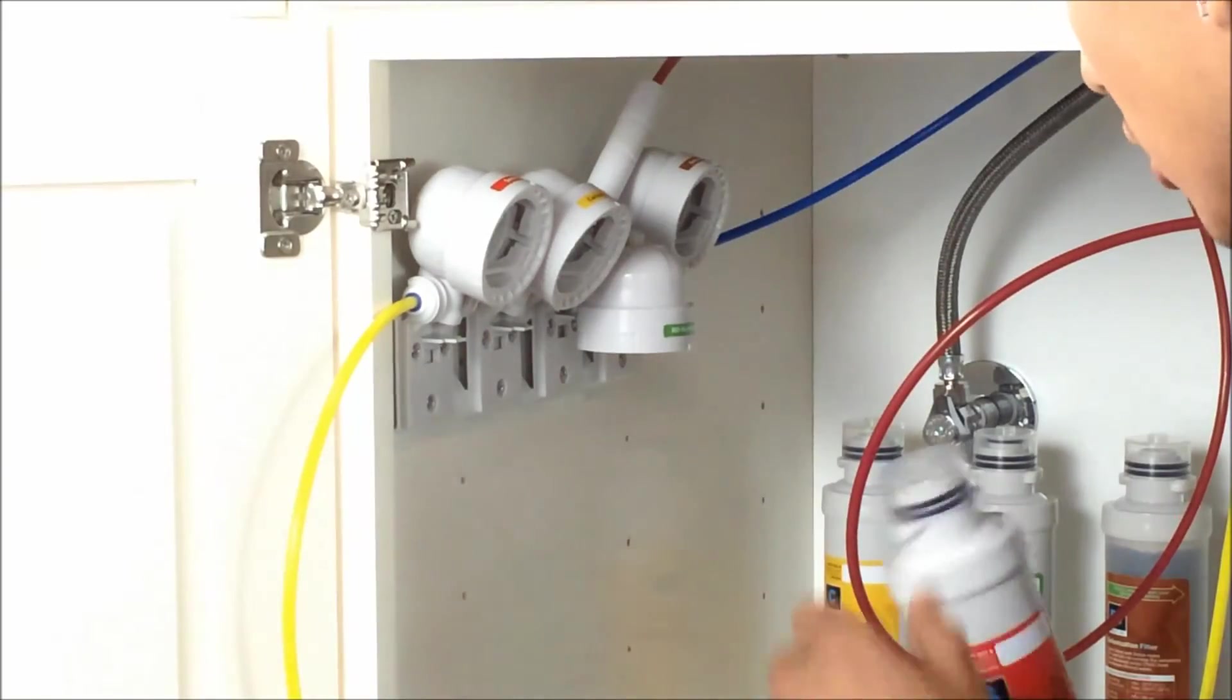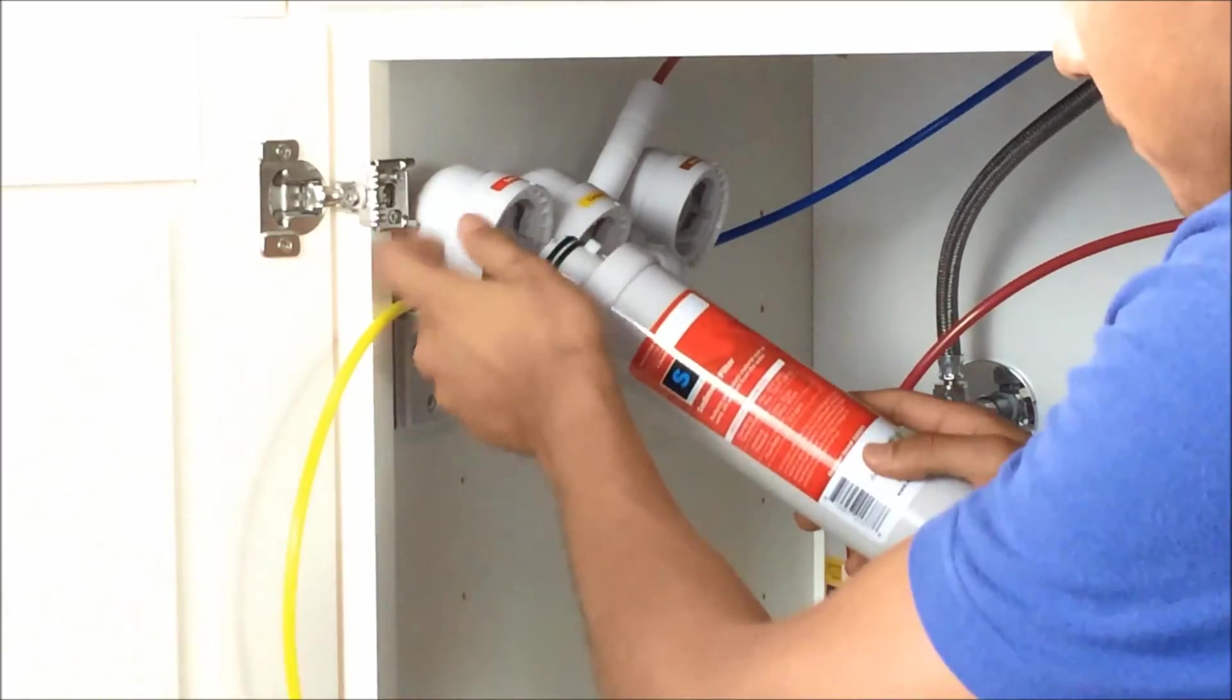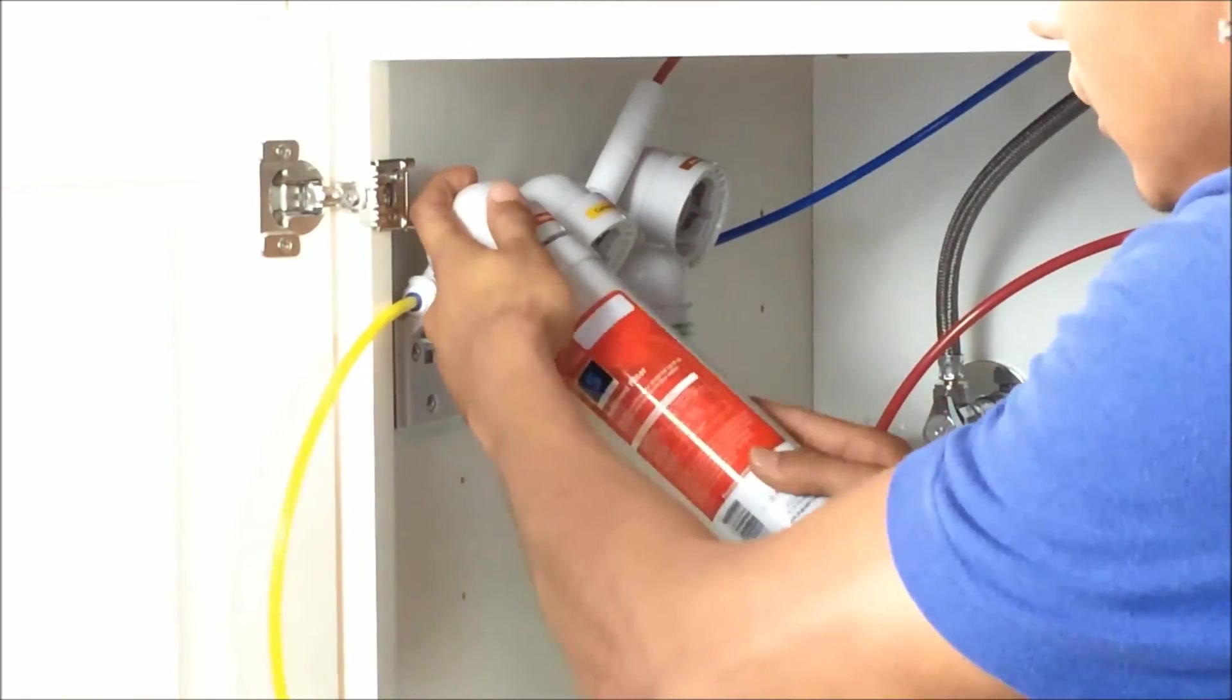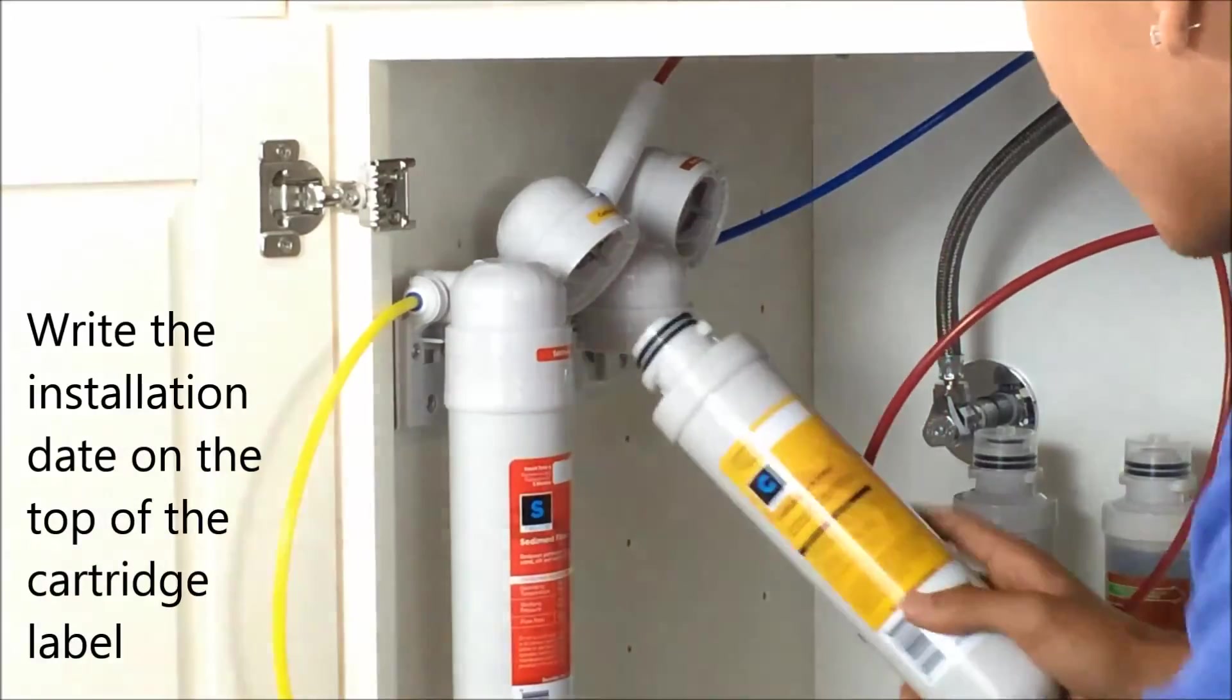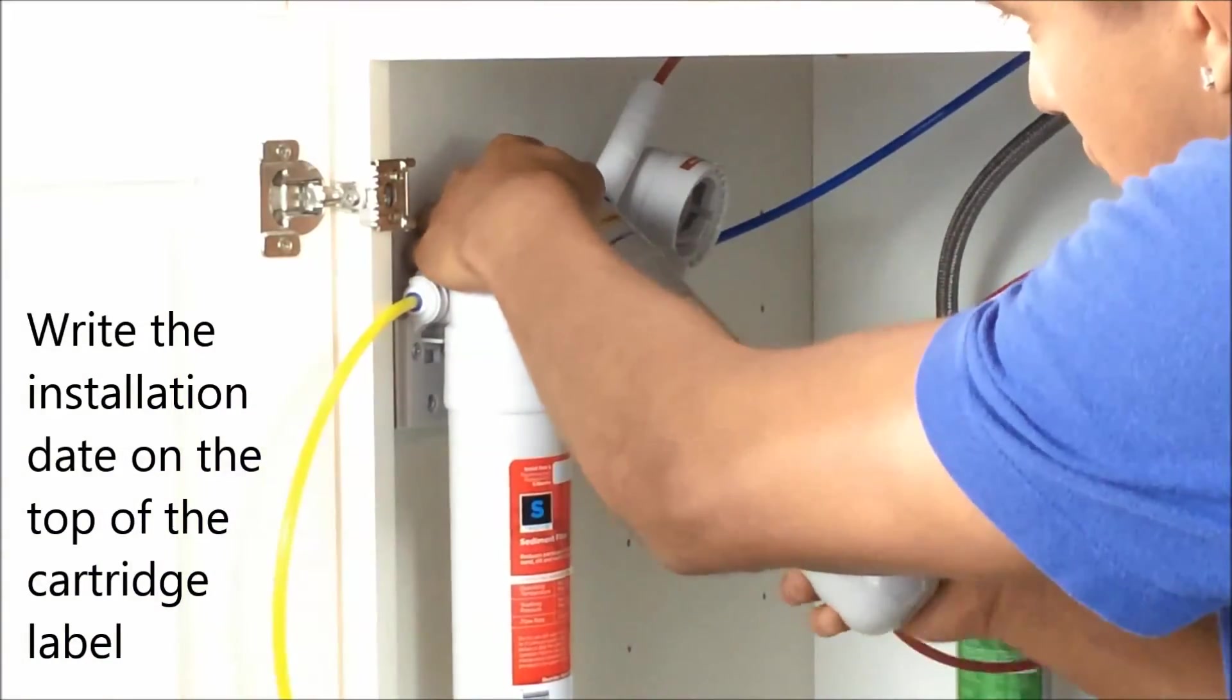Now we'll go ahead and install our cartridges. The first one is our sediment. Put that in place. Twist that. We'll do our carbon block. Put that in place. Twist that.